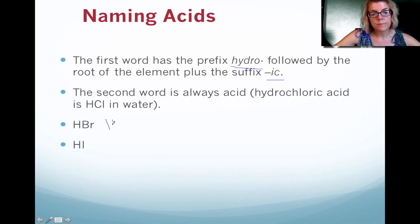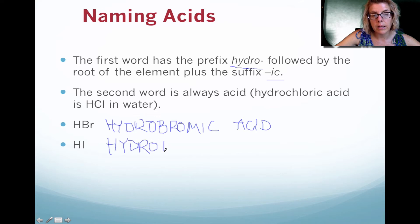So here we have hydro. And this is bromine, but we're going to call it bromic. So hydrobromic acid. That is the name of the acid. And then the second one here, once again, we're going to use the prefix hydro. And instead of iodine, we're going to call it iodic acid. So that is only when you see hydrogen paired up with another element.